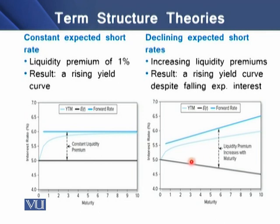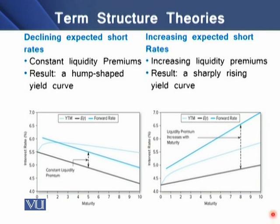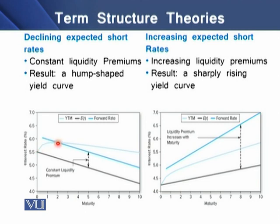In the third case, we have a scenario where the expected short rates are at a declining stage. We see a constant liquidity premium available between the blue and black thick lines. The result is a hump-shaped yield curve in this particular case.